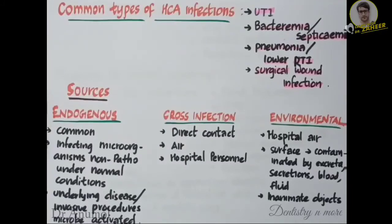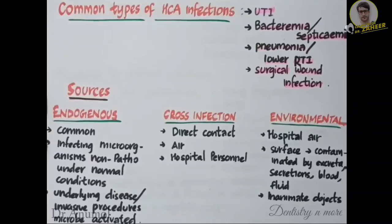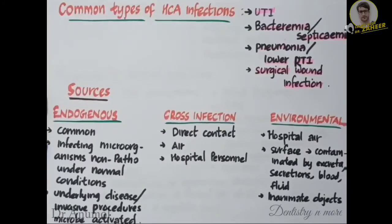Next is bacteremia or septicemia. The risk will be more for patients with indwelling urinary tract catheters. The microorganisms causing this infection are Staphylococcus epidermidis, Enterococcus faecalis, Staphylococcus aureus, etc.